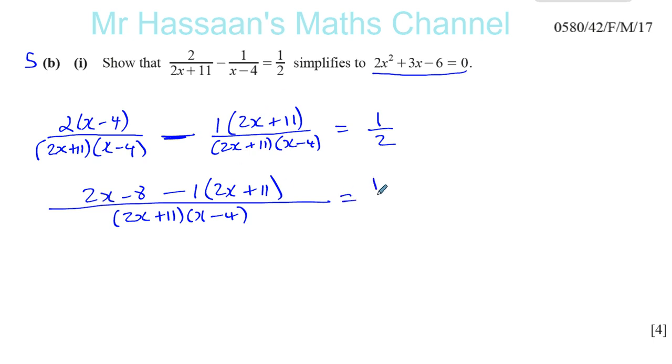I want to be careful because this is where a lot of people get tripped up when there's a minus sign before a fraction like this. Now what I'm going to do in the next step, I'm going to multiply out. So 2x minus 8 minus 2x minus 11.